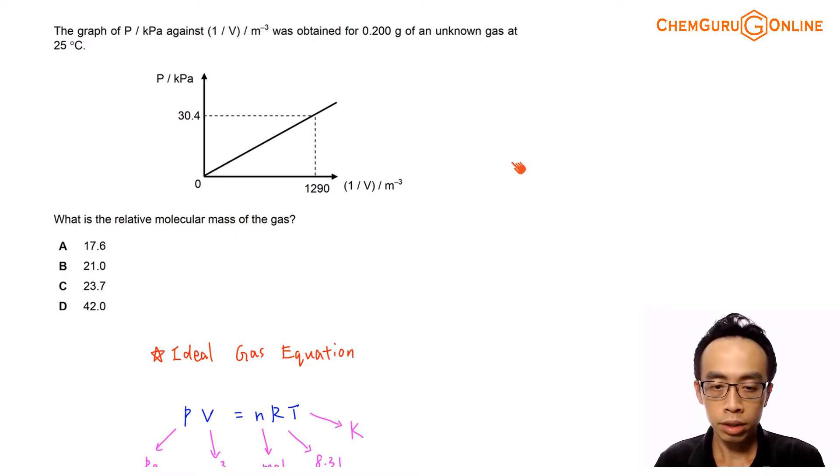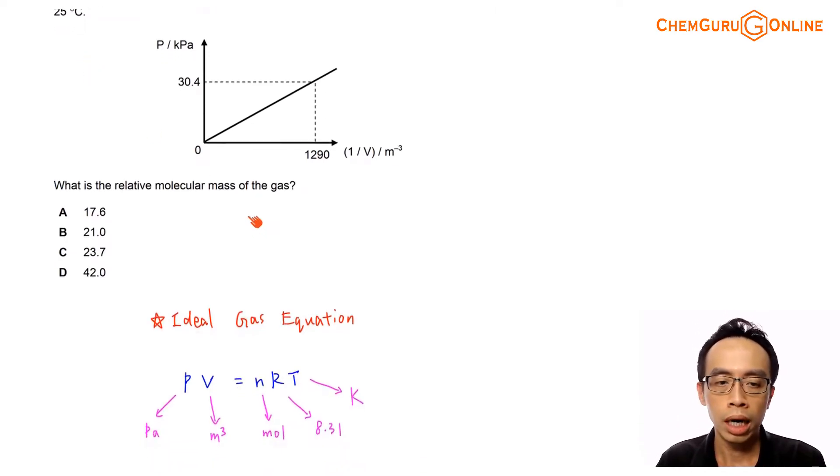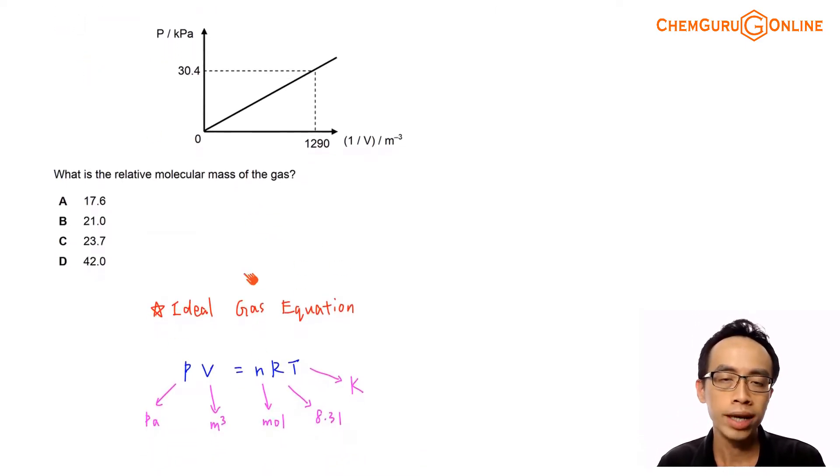Now if we consider information given in the question, we have the graph of pressure against 1 over volume, we have the mass of this unknown gas at a certain temperature, then clearly we are looking at my ideal gas equation.